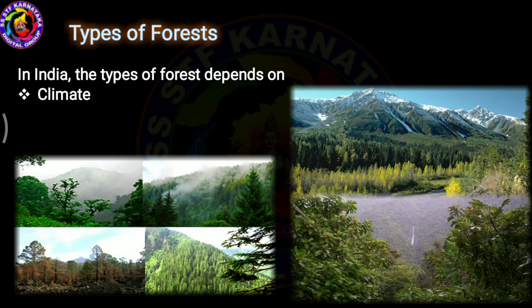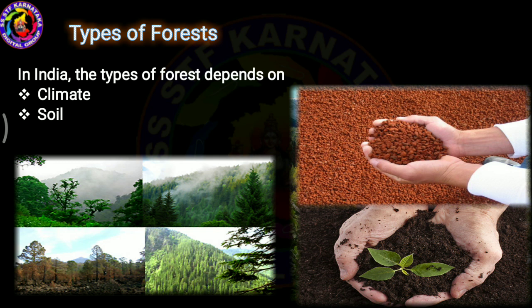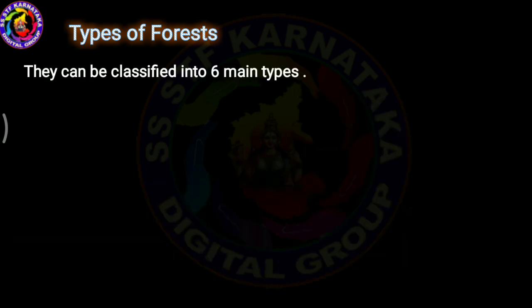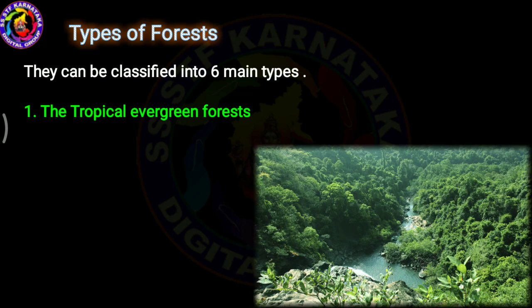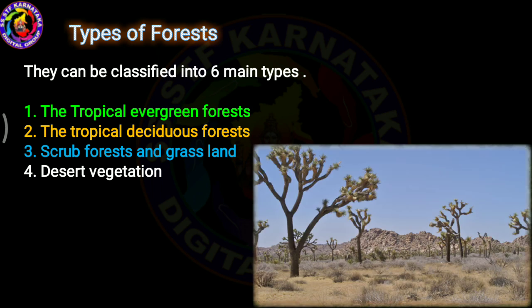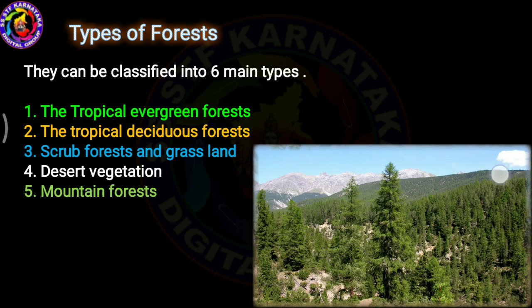The types of forest in India depend on climate, because you can't find the same uniform type of forest everywhere. Different types of forests exist based on climate, soil, fertility, relief features — whether it's a desert area, mountain area, or closer to the ocean. On this basis, forests are classified into six types: tropical evergreen, tropical deciduous, scrub forest and grassland, desert vegetation, mountain forest, and mangrove forest.